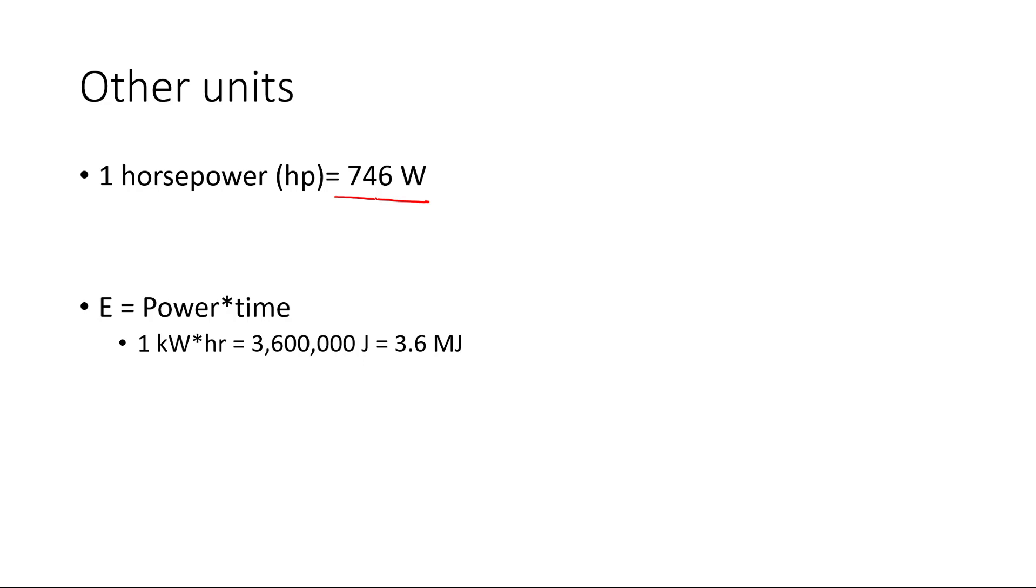Also, if we rearrange the power equation, we can solve for energy and we get energy is equal to power times time. And that's actually where one of our common units of electrical energy comes from, the kilowatt hour. Kilowatt is a unit of power. Hours are a unit of time. So when we multiply them, we get a unit of energy. And it's the amount of energy required to draw one kilowatt of power for one hour. It ends up being exactly 3.6 megajoules, 3.6 million joules.